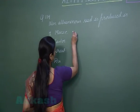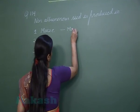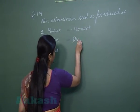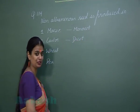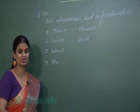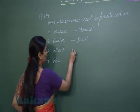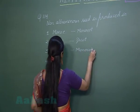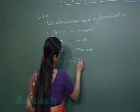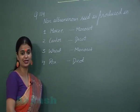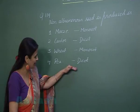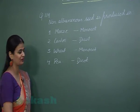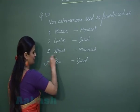Maize, the first option, represents a monocot. Castor is a dicot but it's an exception — it is a dicot which possesses endosperm in the seed. Wheat is again a monocot. Pea is a dicot in which the seed does not possess endosperm at maturity, so this is the right answer.